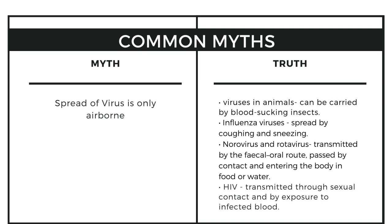There is a common belief that the spread of viruses is only airborne, as they are very lightweight organisms. The truth is viruses in animals can be carried by blood-sucking insects. Influenza viruses spread by coughing and sneezing. Norovirus and rotaviruses are transmitted by the faecal-oral route, passed by contact and entering the body in food or water. HIV is transmitted through sexual contact and by exposure to infected blood.